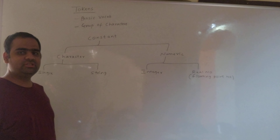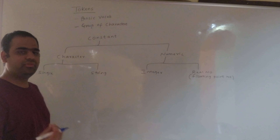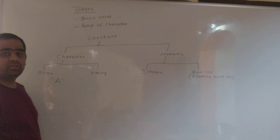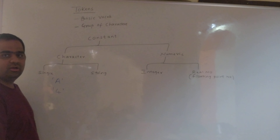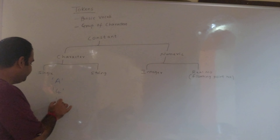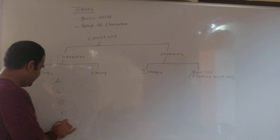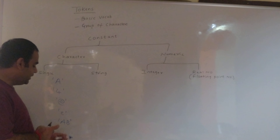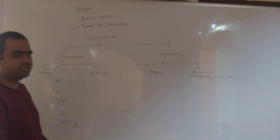A single character constant is something which is written in single quotes and should be of length one. For example, 'a' written in single quotes is a single character constant. Similarly, '4' written in single quotes is a single character constant, and '@' as well. But if we write 'ab' in single quotes, it is not a single character constant because even though it is written in single quotes, it is not of length one.